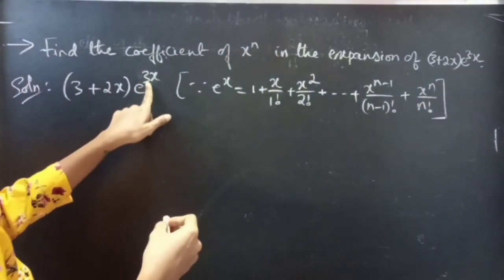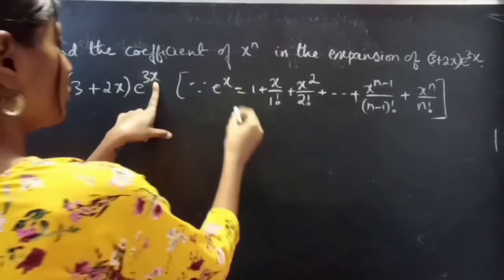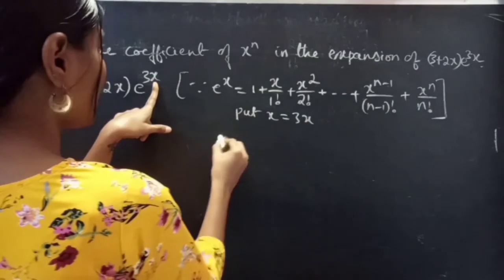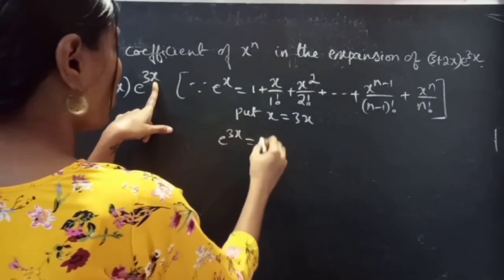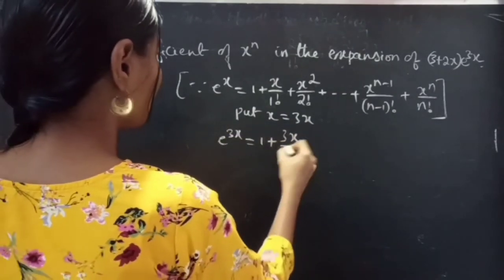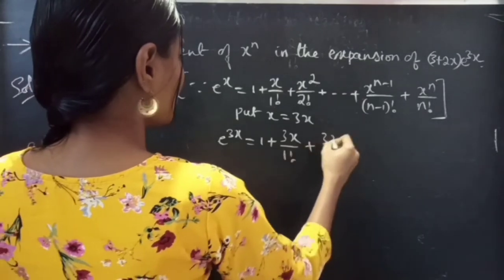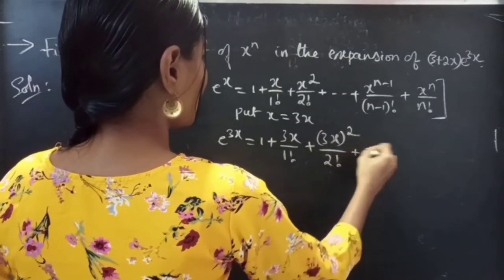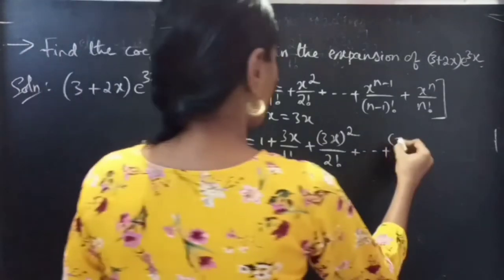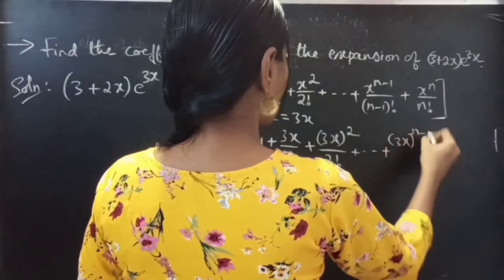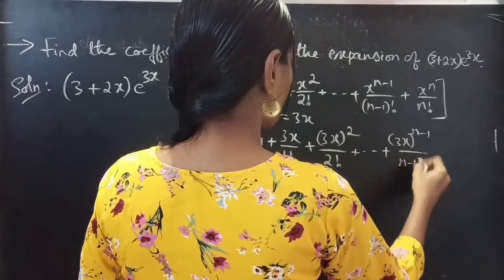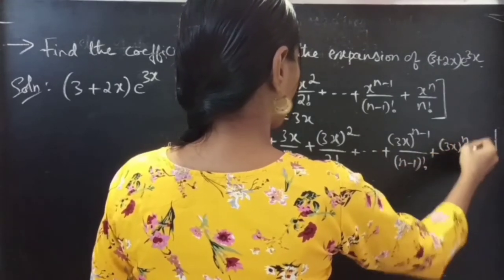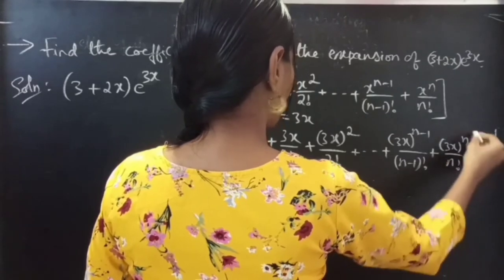Now we can expand e power 3x. Simply put x equals to 3x, then we will get e power 3x equals to 1 plus 3x by 1 factorial plus (3x) squared by 2 factorial plus so on plus (3x) power (n minus 1) by (n minus 1) factorial plus (3x) power n by n factorial.